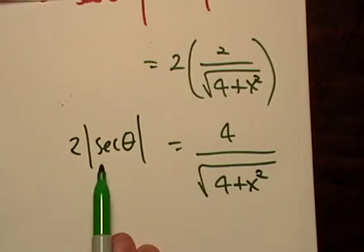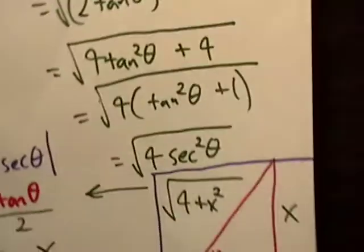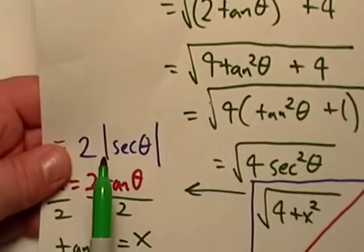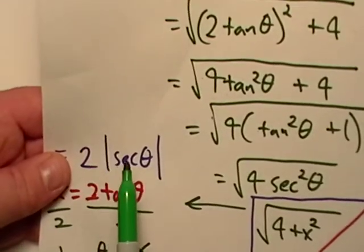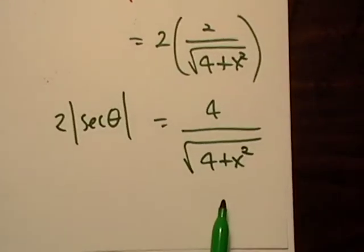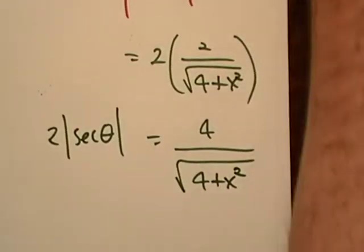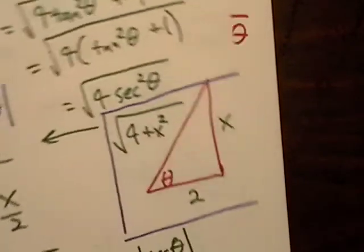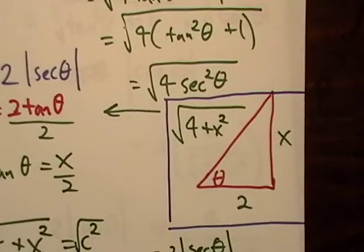So we did our simplification, we went ahead and did our substitution, and we ended up with 2 multiplied by the absolute value of secant, and we just wrote it in terms of x instead of theta. That's the proper way to do it, and we did that by drawing a triangle and using our trig functions. Alright, thanks for watching, and I'll see you in the next video.